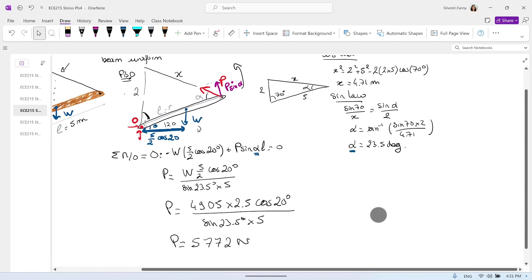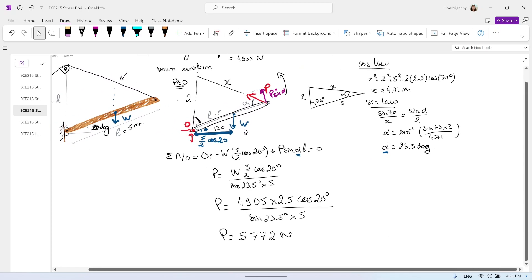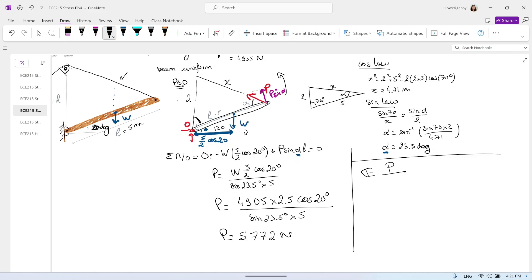And we have one last step because what we need is not the force but the stress. So we go grab the formula for the stress. Sigma equal the normal force. In our case, here it's P divided by the area of the cable. And we know that the cable is 5 centimeters. Remember, we need to use millimeters for millimeter square for the area.